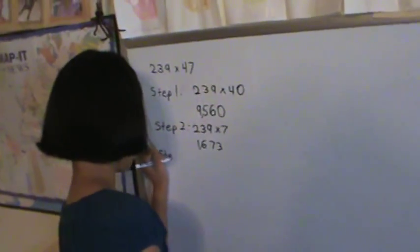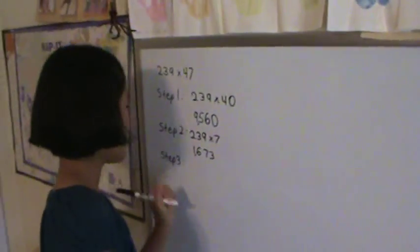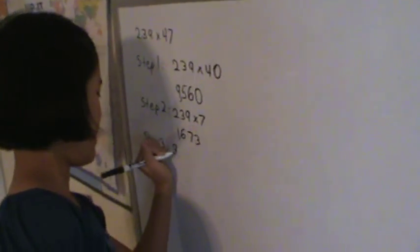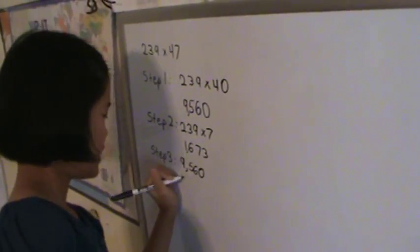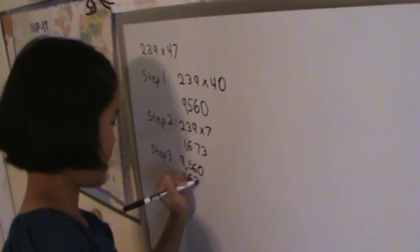Step 3 is where you get the answer. And in step 3, you add 9,560 to 1,673.